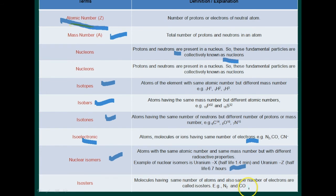Isosteres are molecules having the same number of atoms and also the same number of electrons — for example, nitrogen and CO. These are the terms and definitions.